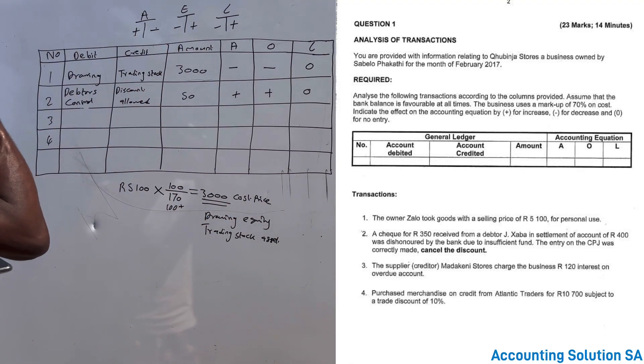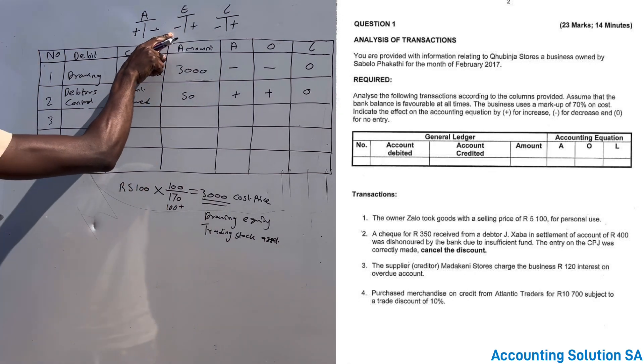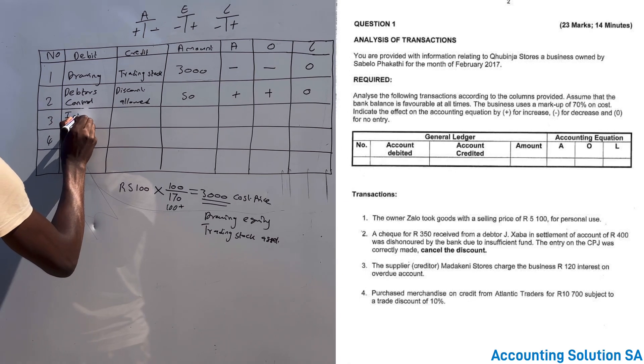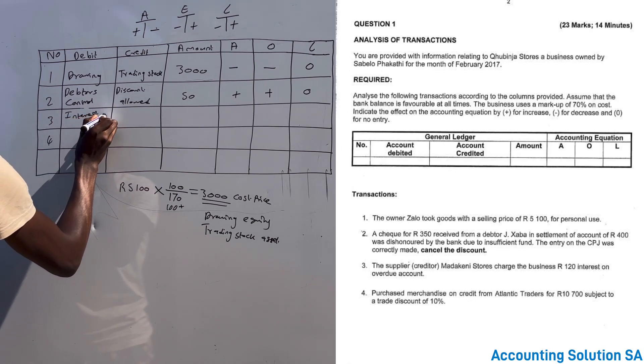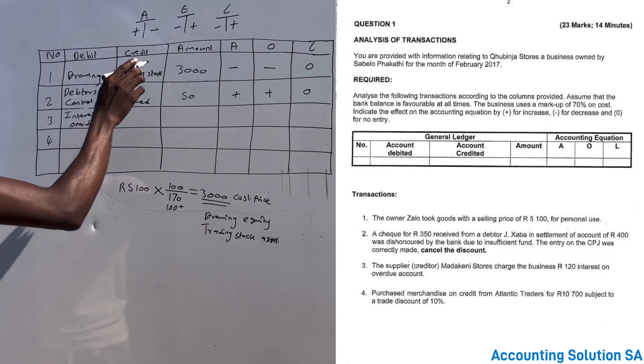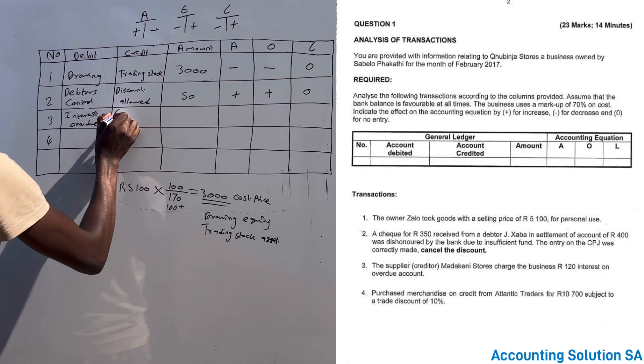They charged us interest on overdue account, which means that now we are going to face more interest and more liabilities. More interest, where do we record expense? This side, on the debit side. It's an expense: interest on overdue.